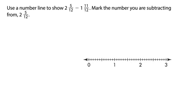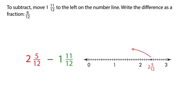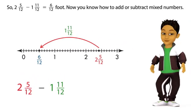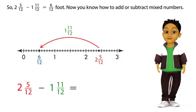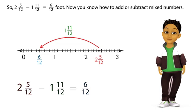Use a number line to show two and five twelfths minus one and eleven twelfths. Mark the number you are subtracting from: two and five twelfths. To subtract, move one and eleven twelfths to the left on the number line. Write the difference as a fraction: six twelfths.